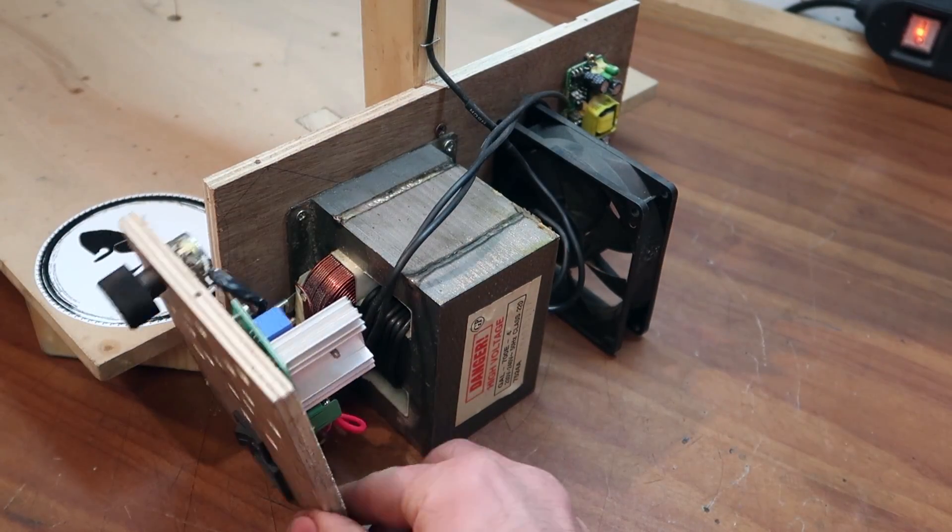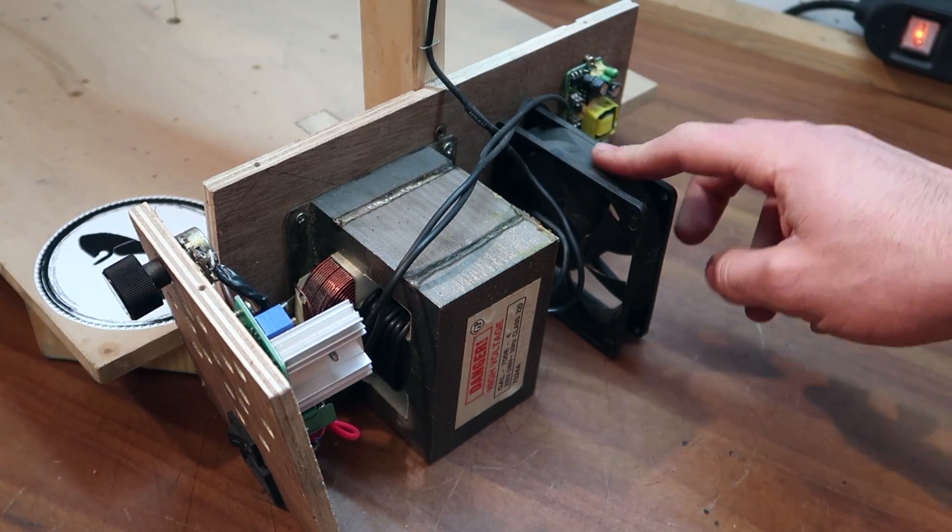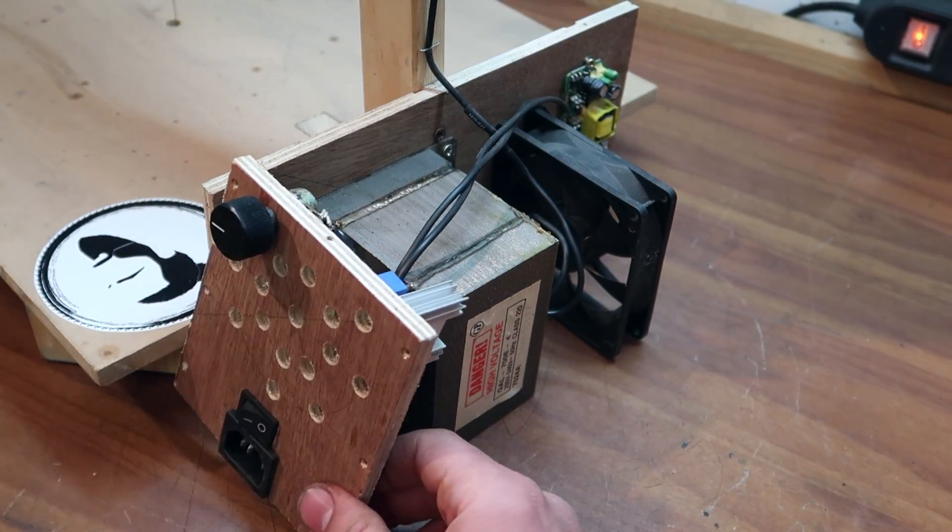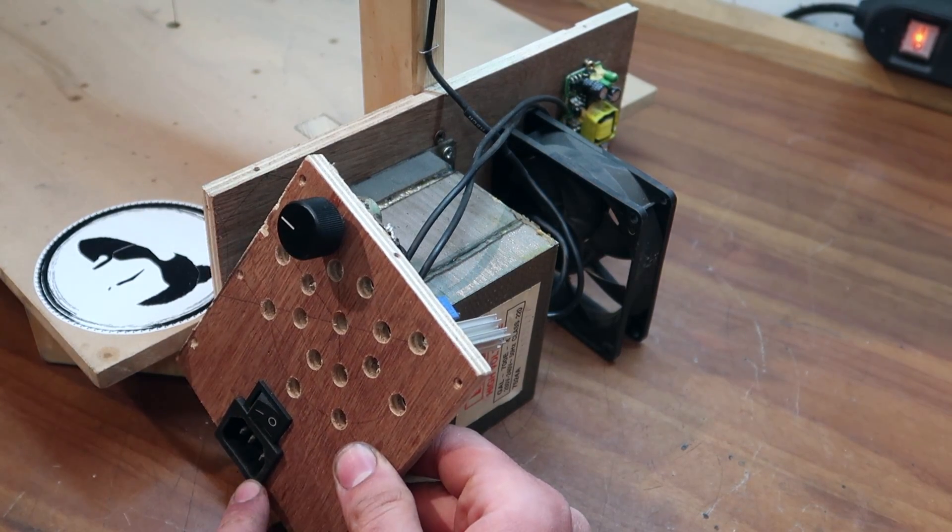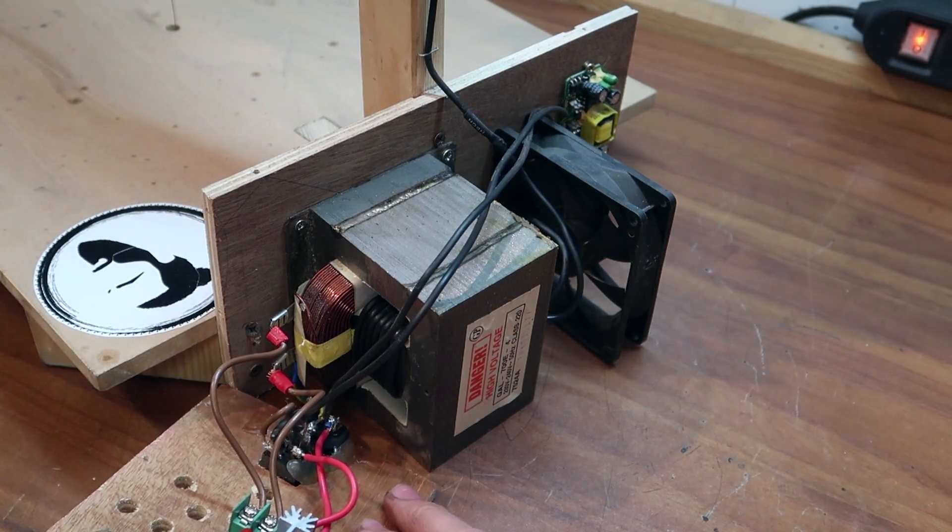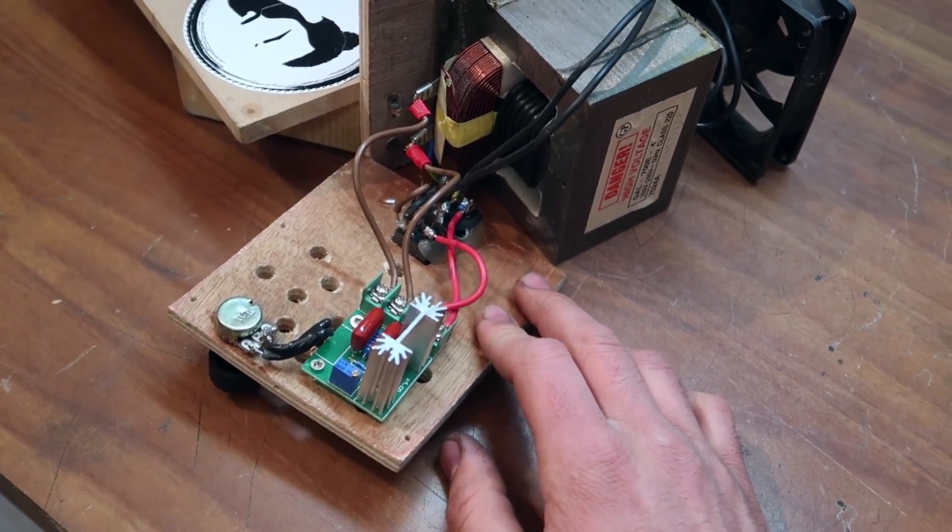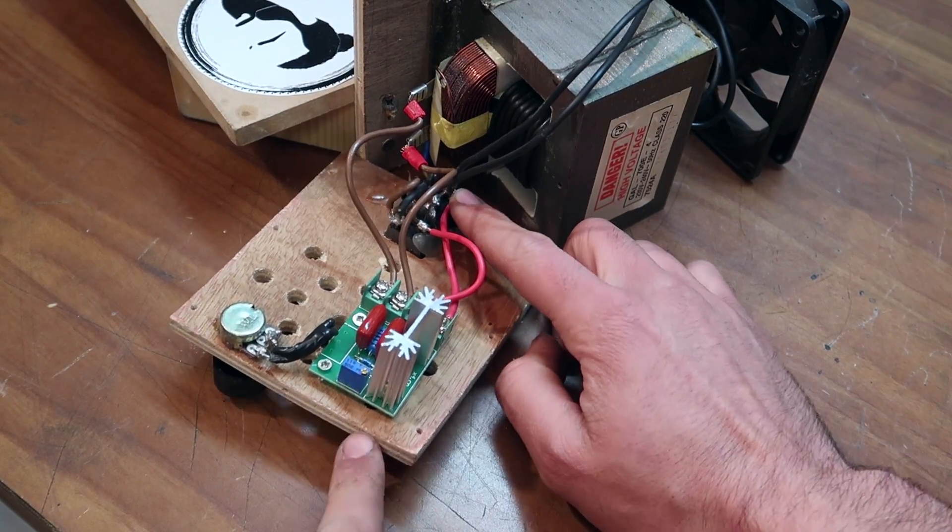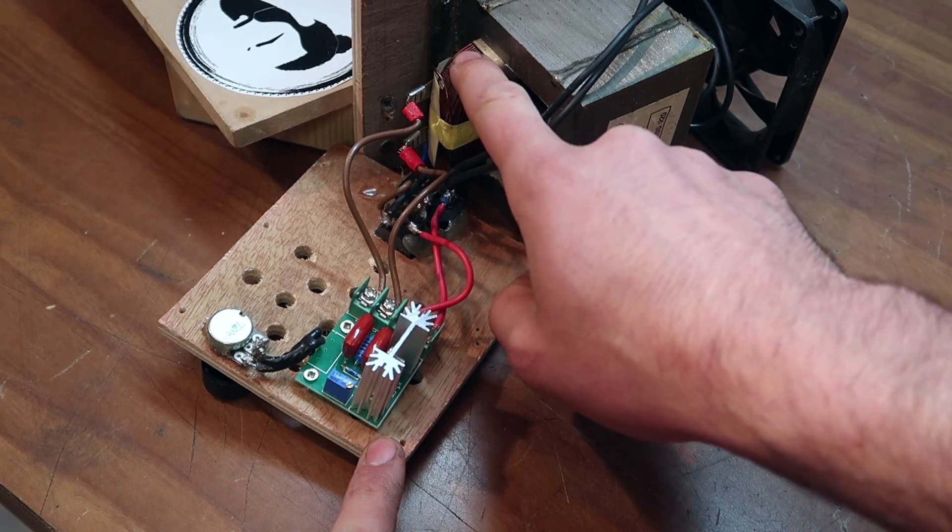From here you can see all the components. The first is a PC fan powered by an old smartphone charger. The machine can be turned on with this switch. I added this part just now. It's a light dimmer that will regulate the current going into the transformer.